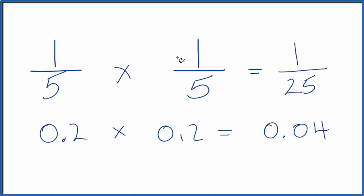So one-fifth of one-fifth is one-twenty-fifth, or it's 0.04 as a decimal.